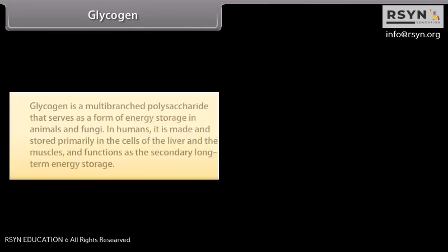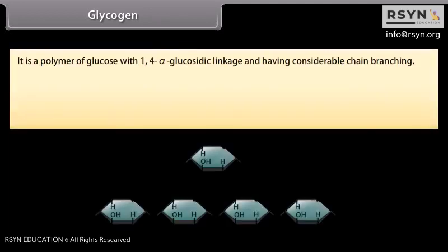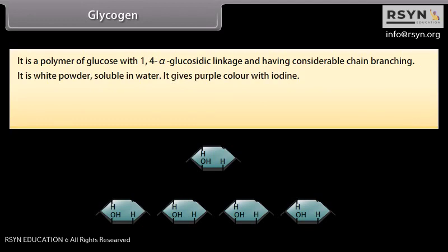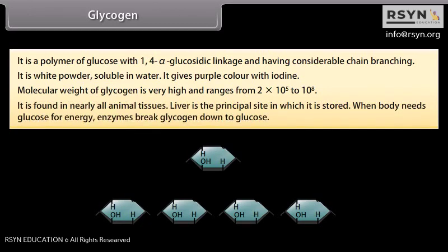Glycogen is a multi-branched polysaccharide that serves as a form of energy storage in animals and fungi. In humans, it is made and stored primarily in the cells of the liver and muscles, functioning as secondary long-term energy storage. It is a polymer of glucose with 1,4-alpha-glucosidic linkage and considerable chain branching. It is a white powder soluble in water and gives a purple color with iodine. Molecular weight of glycogen ranges from 2×10⁵ to 10⁸. When the body needs glucose for energy, enzymes break glycogen down to glucose.